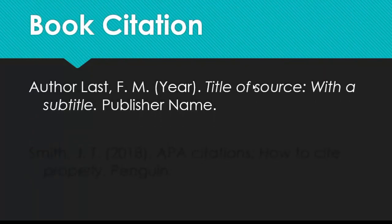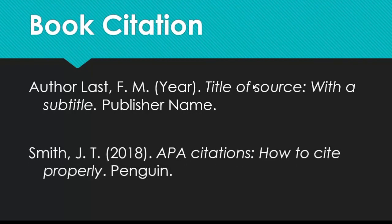A book citation will start with the author's last name and initials, followed by a period. Then the publication year in parentheses, followed by another period. Then the title in italics, with only the first word, any proper nouns, and the first word of the subtitle capitalized, followed by a period. You would finish the book citation with the name of the publisher. This information can usually be found on the spine of the book, on the book's interior title page, or you can also usually google the book. The Amazon listing will always include it if you're stuck.